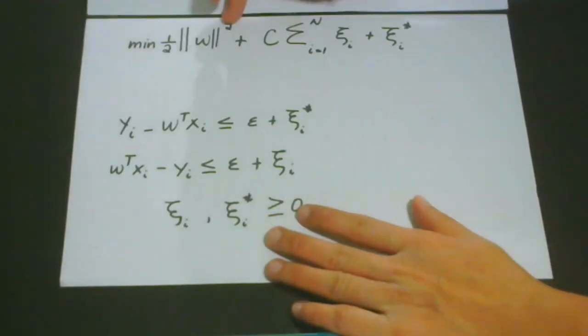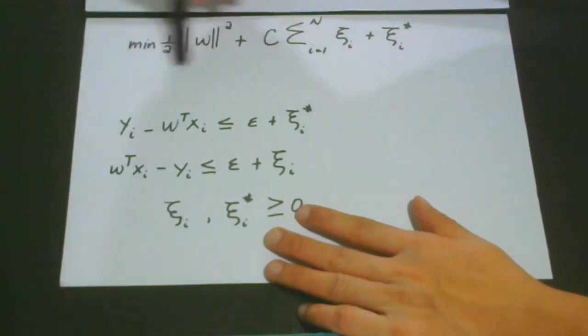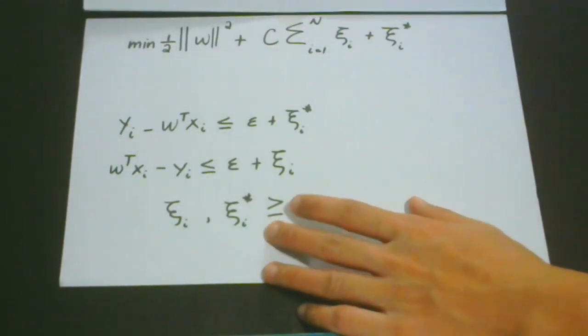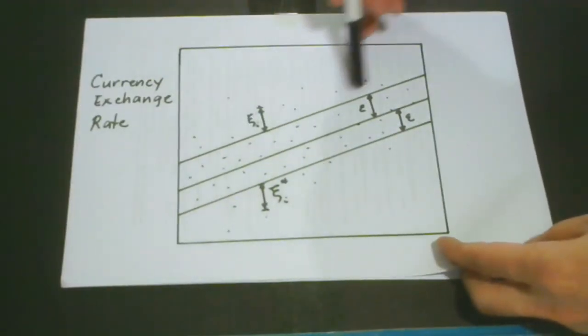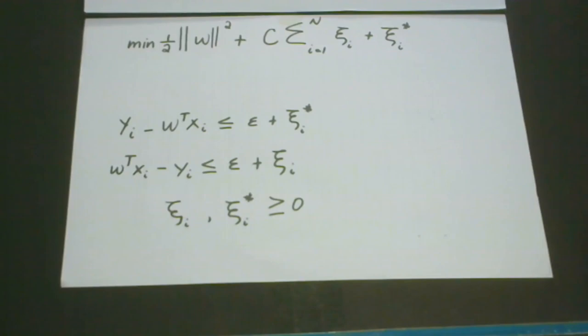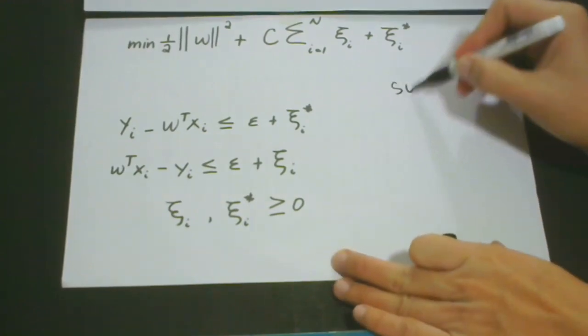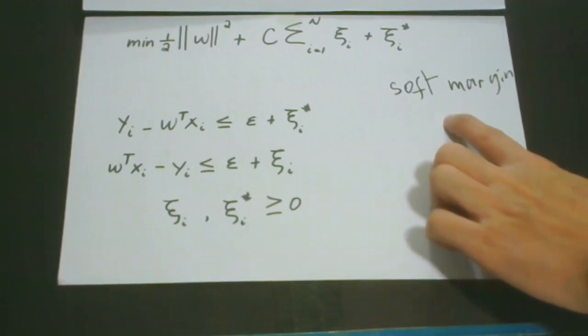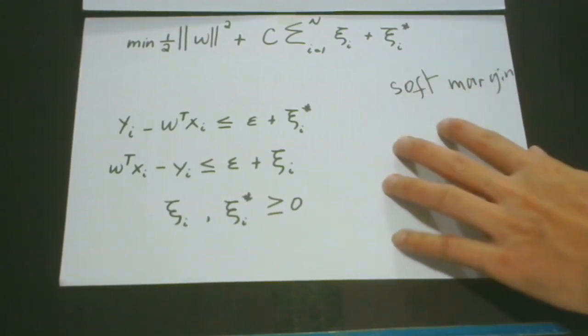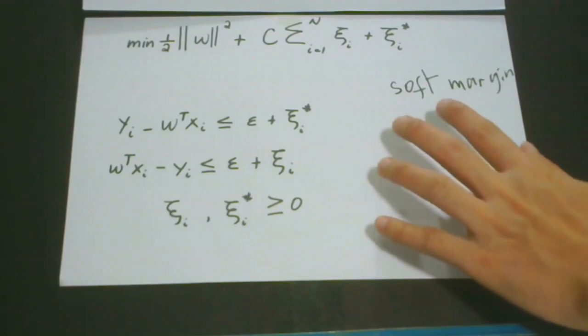But of course, the story of our predictive model using support vector regression does not end in this case because we also have to consider the different points that we can find outside our tube. This is actually what we call our soft margin. And this concept of soft margin is actually very similar to that concept that you have in your support vector machine.